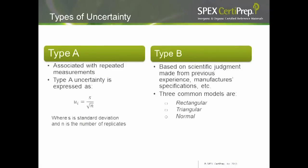To determine your uncertainty, you first determine what you wish to measure, outline the process you are conducting, identify all sources of uncertainty, estimate the uncertainty from each source, and finally combine and expand all your uncertainties. Once you determine your sources of uncertainty, you must decide what type it is. Type A uncertainty is associated with a number of measurements or a standard deviation of a mean. Type B uncertainties are based on scientific judgment and experience. There are three common models of uncertainty: rectangular, triangular, and normal.